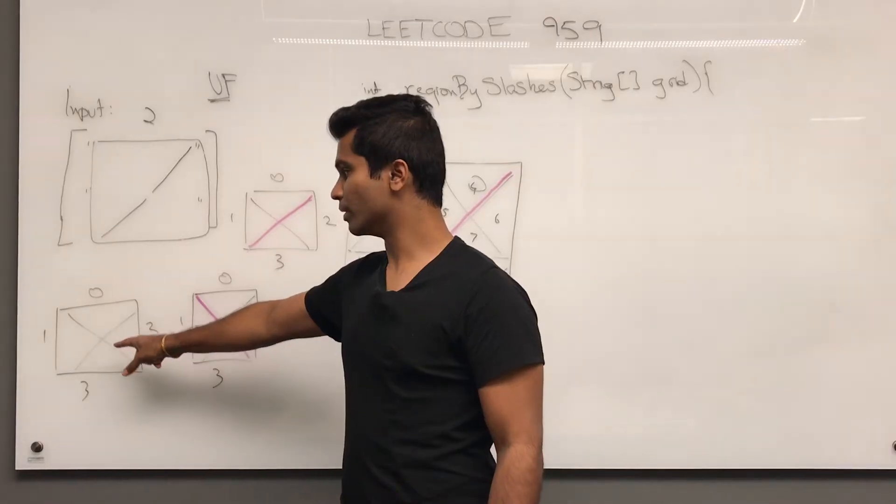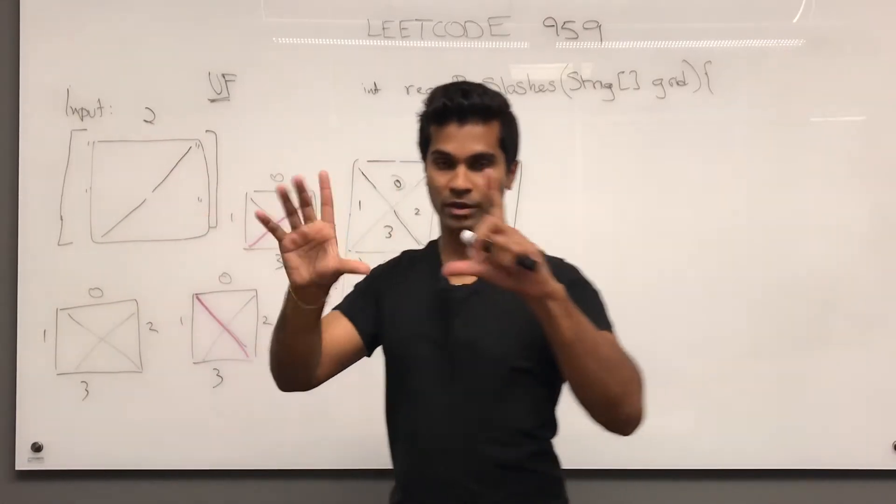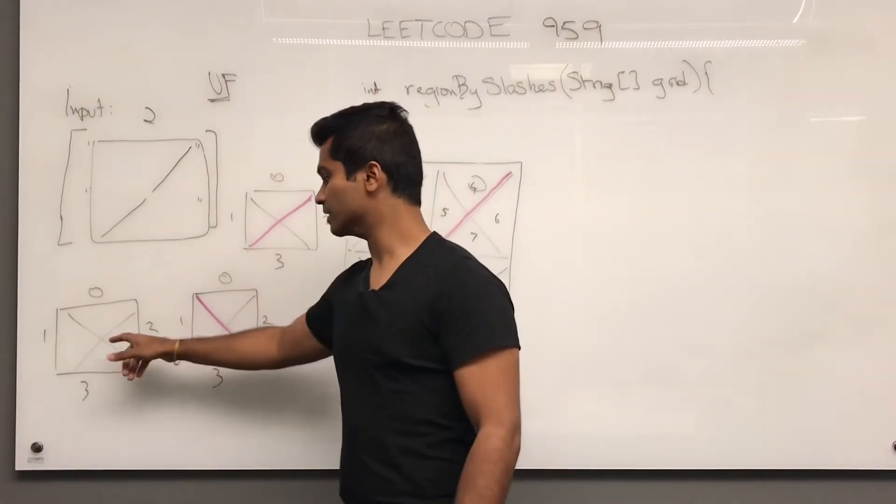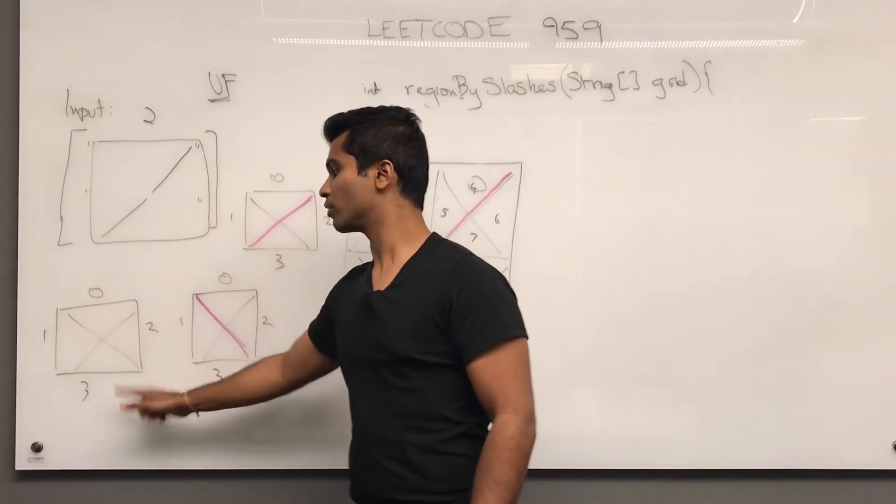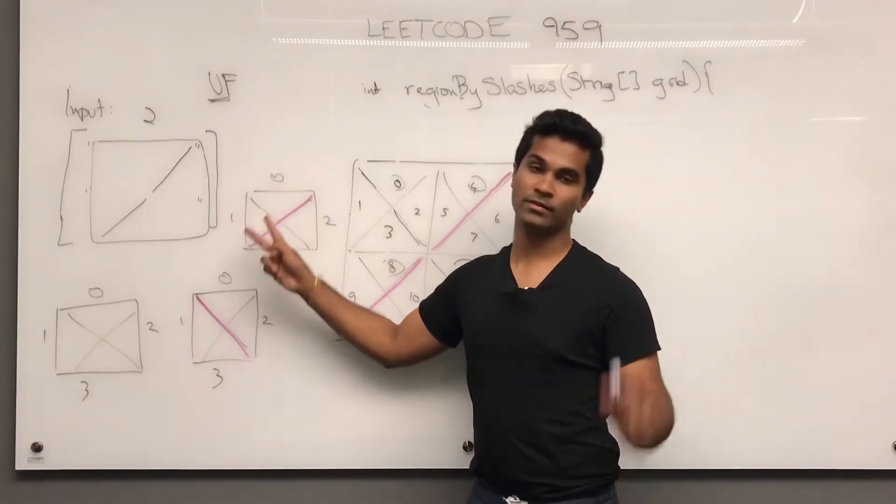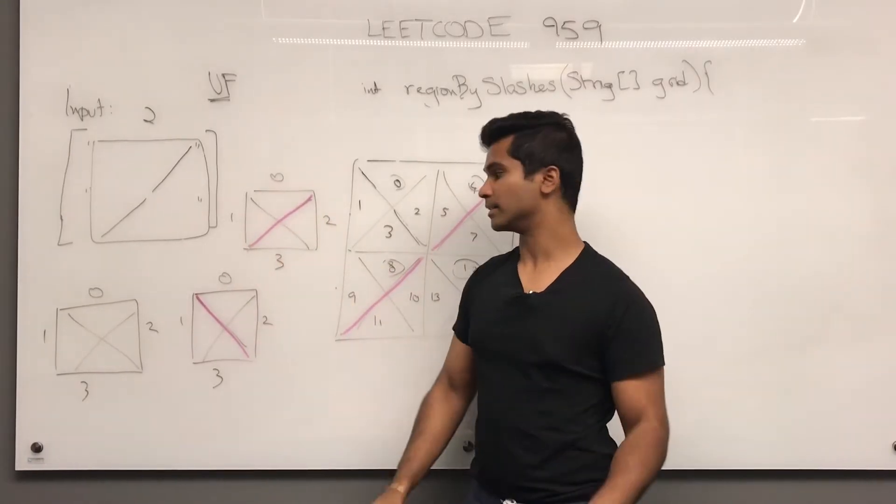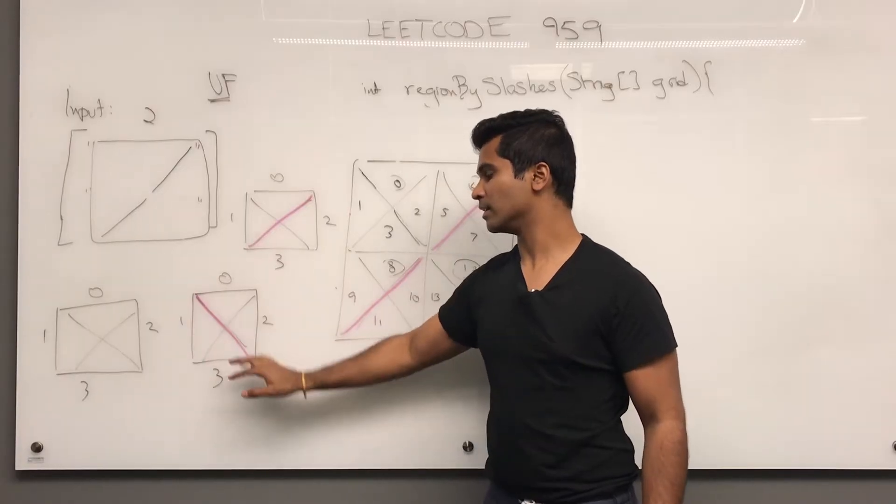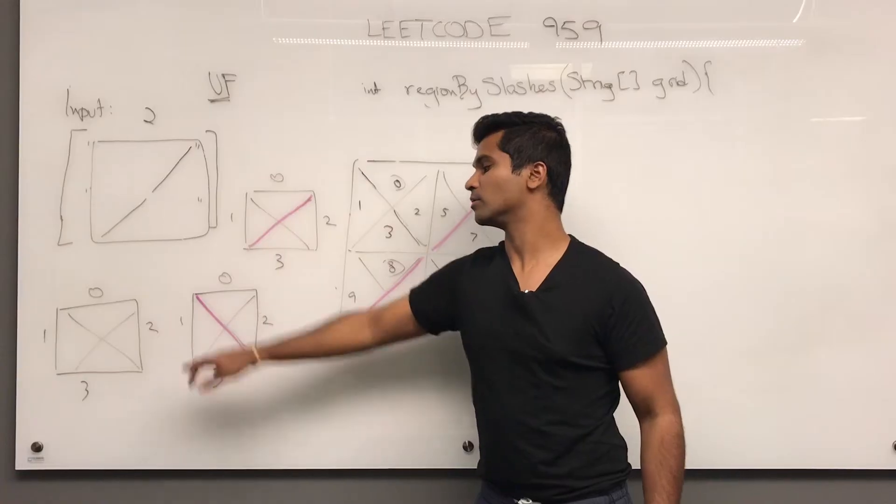Now if we take a square, it's going to be split into 0, 1, 2, 3 and if it has a slash going this way then these two are definitely connected and these two are definitely connected. Same way if it's like this. These two are definitely connected and these two are definitely connected.